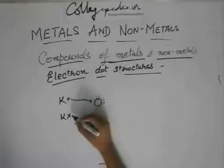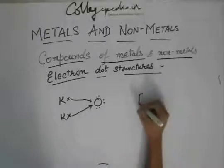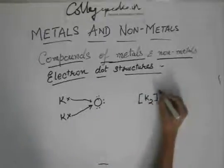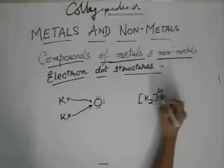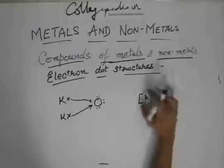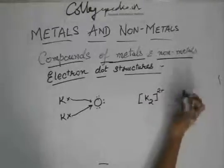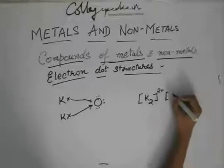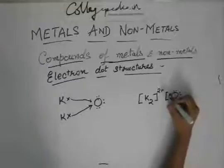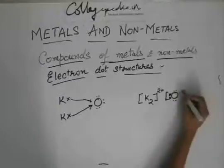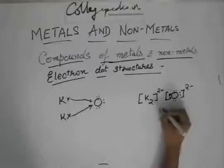And these two Ks will donate their two electrons to oxygen. And this will become K2 two plus. Remember, this does not become four plus, it remains K+ and K+, it's just K+ plus K+. So K2 two plus. And this, six of its own, two taken from the two Ks, and two minus. And then K2O.